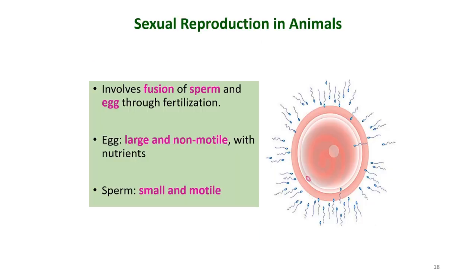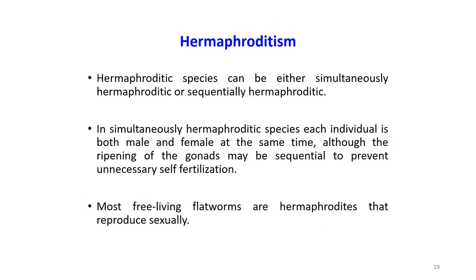Sexual reproduction in animals involves the fusion of sperm and egg through fertilization. The egg is large and non-motile with nutrients, while sperm is small and motile. Hermaphroditism is a type of reproduction in which an organism can have both male and female reproductive organs. There are two types: simultaneous hermaphroditism and sequential hermaphroditism. In simultaneous hermaphroditism, an individual is both male and female at the same time.